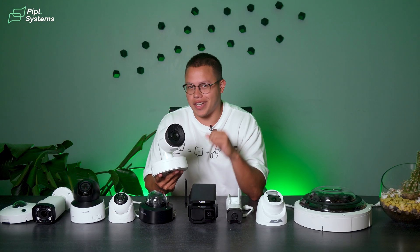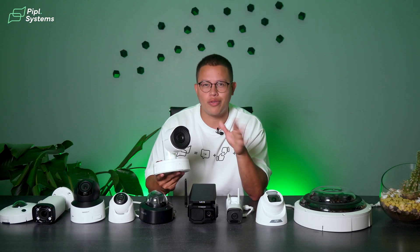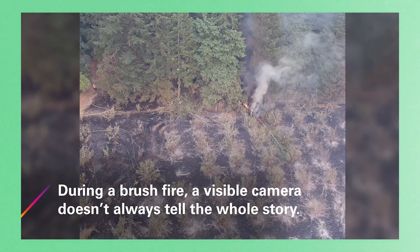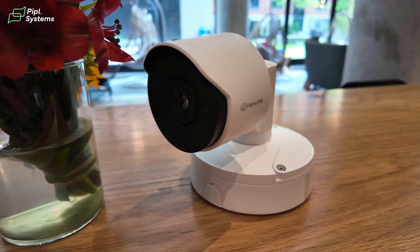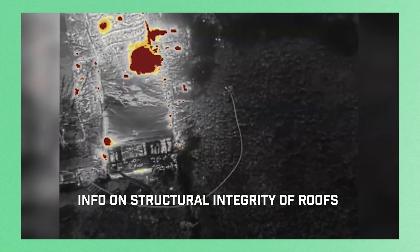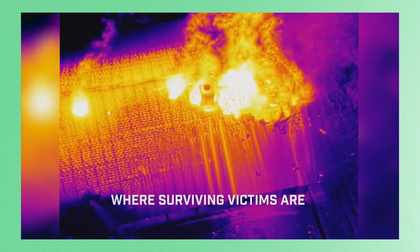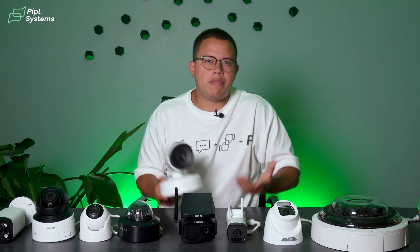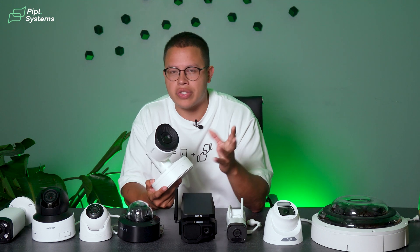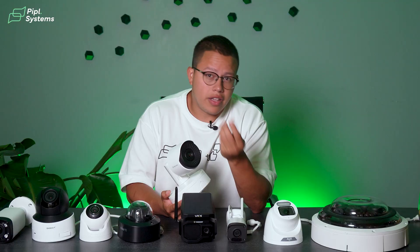Thermal cameras detect heat signatures rather than visible light — a bit like the vision from The Predator. They are super effective in complete darkness and can even see through smoke or fog. These cameras can be used, for example, on forest drones and patrols to detect heat zones prone to forest fires, having amazing reach for heat detection and helping local authorities take necessary precautions. However, they do tend to be more expensive and may not provide as detailed images as visible light cameras. They are made for specific purposes.